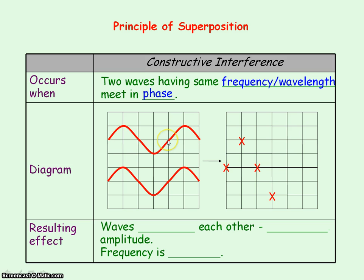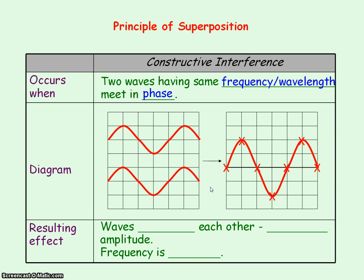At the next point along, again they're both at zero displacement. At the next point along, they're both at plus one displacement, so the resultant will be plus two. And then at this last point, they're both at zero displacement. So our resulting wave will look like this — the waves have reinforced each other, adding positively to each other.